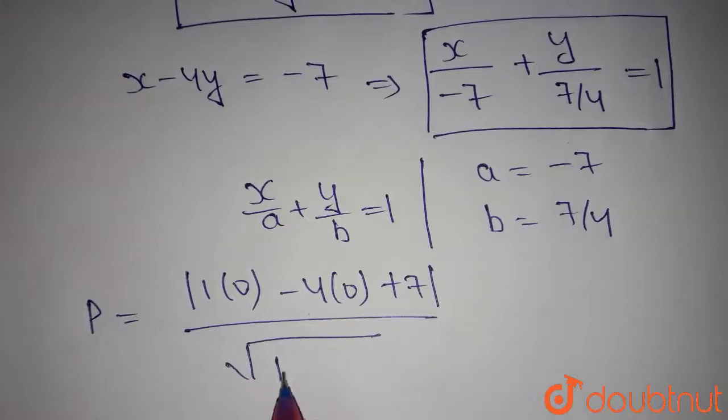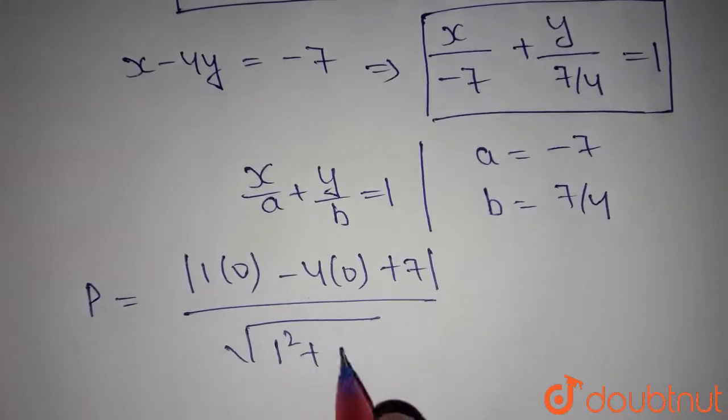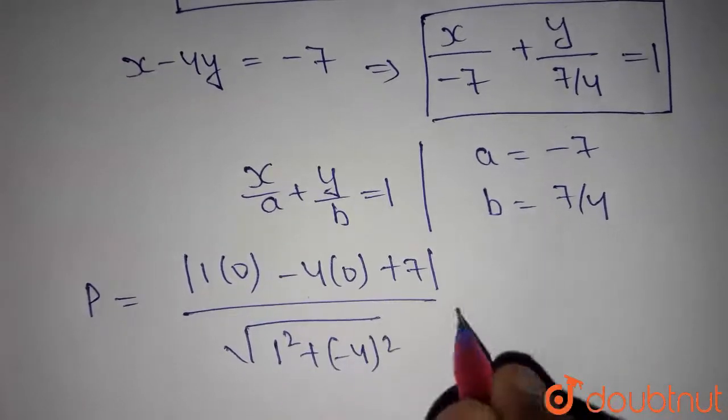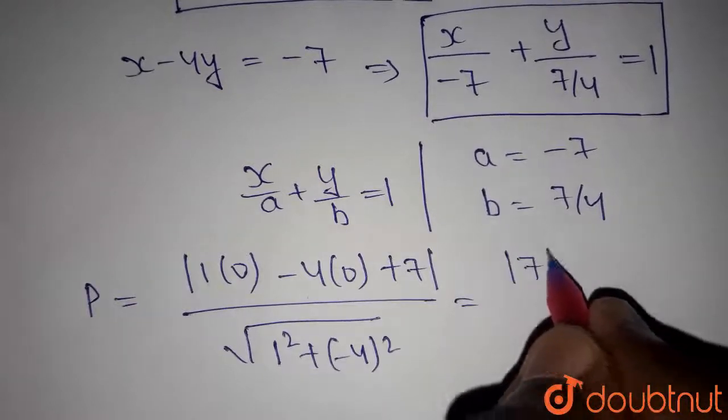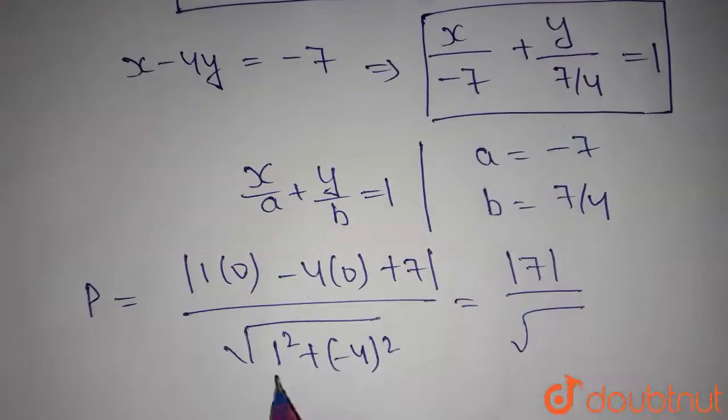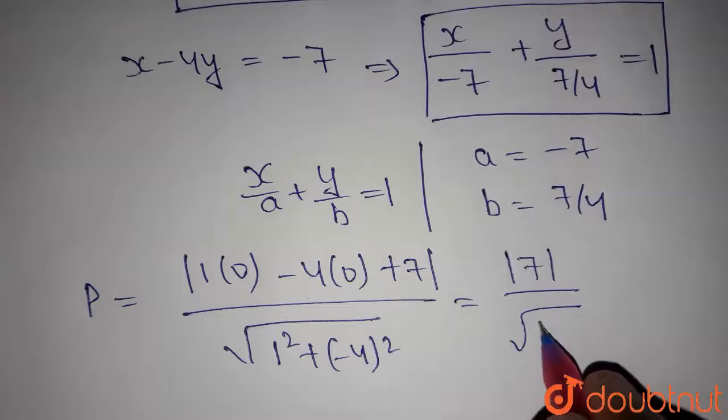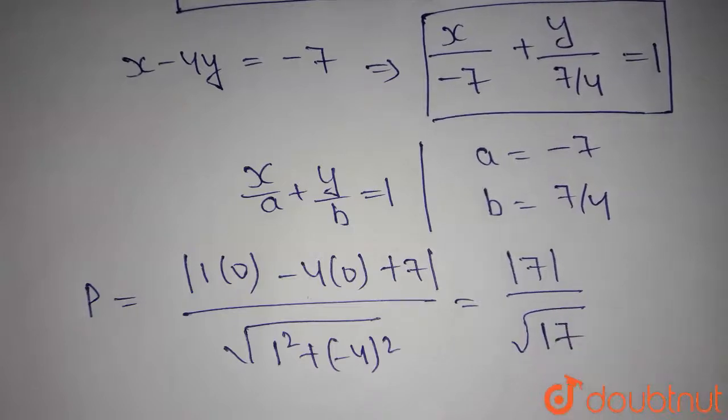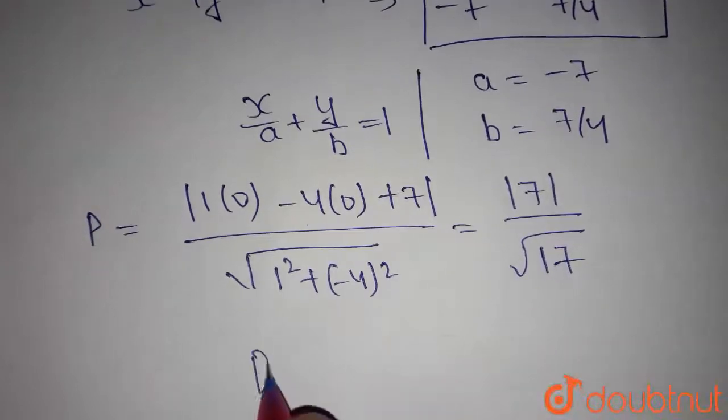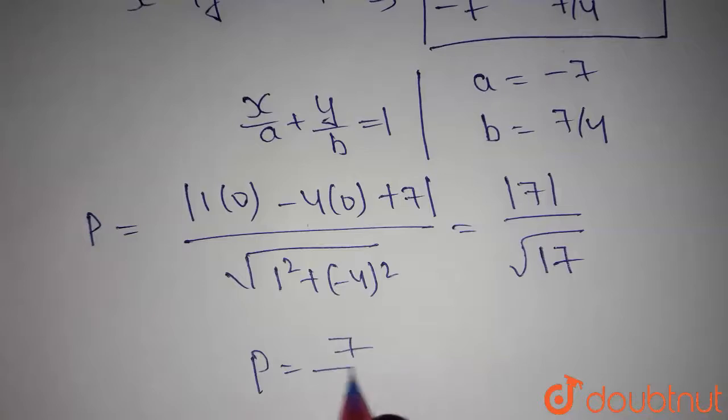which is 1 square plus y coefficient square which is minus 4 square which gives modulus of 7 by root over 1 plus 16 which is 17. So, p is equals to 7 by root 17 units.